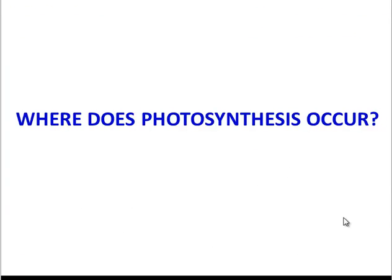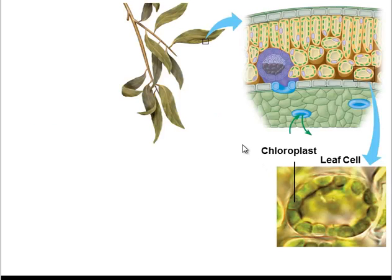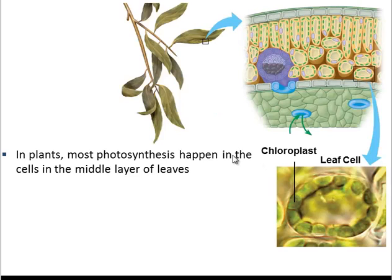So where does photosynthesis occur within these autotrophic organisms? Well, let's focus on the plant. Most photosynthesis happens in the leaves of a plant. And if we zoom in on a leaf, we'll find photosynthesis really tends to happen in the middle layer,